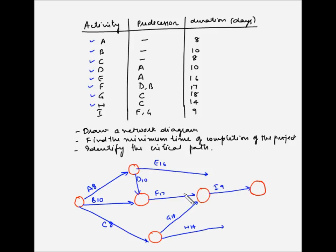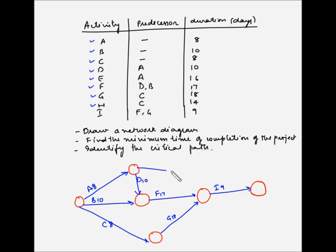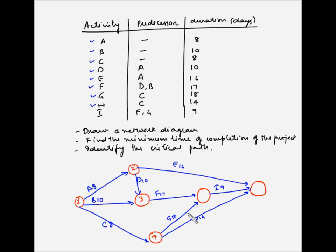Activities E and H will also end at the finish node because there is no activity dependent on these two. E takes 16 days and H takes 14 days going to the finish node. Now let us do the node numbering, which goes from left to right. We have completed step one: drawing the network diagram.